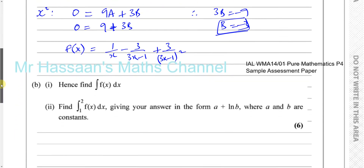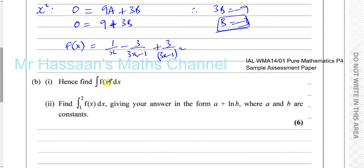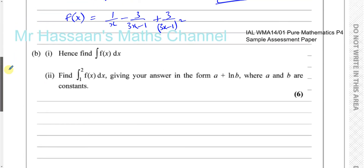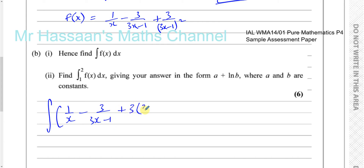Part B says, hence find the integral of f of x, and then evaluate the integral with the given limits. So we take what we found and integrate it. We need to integrate 1 over x, minus 3 over 3x minus 1, plus 3 times 3x minus 1 to the power of negative 2, with respect to x.